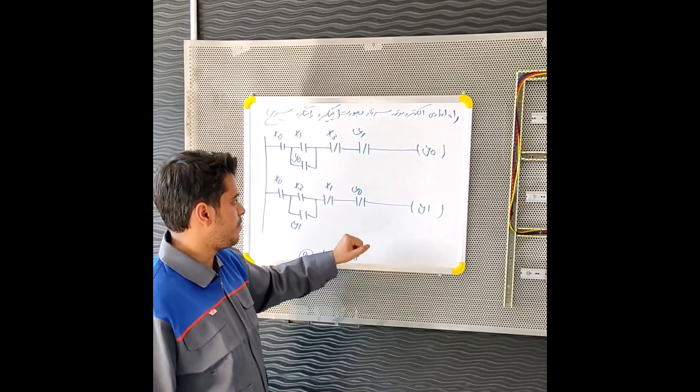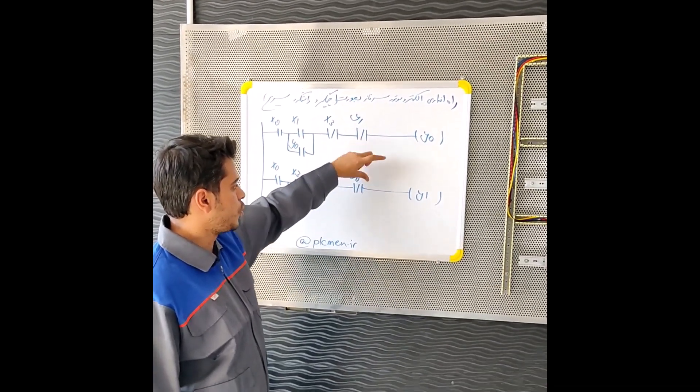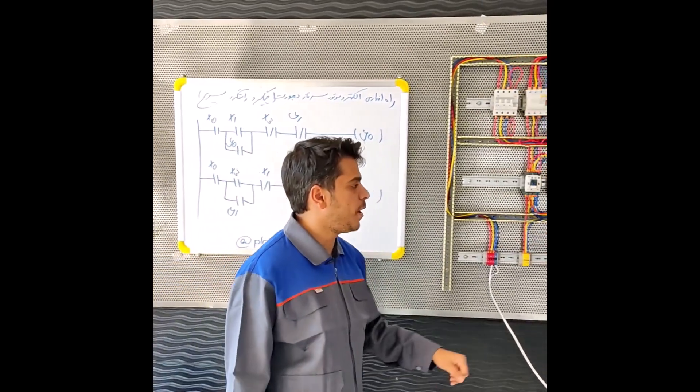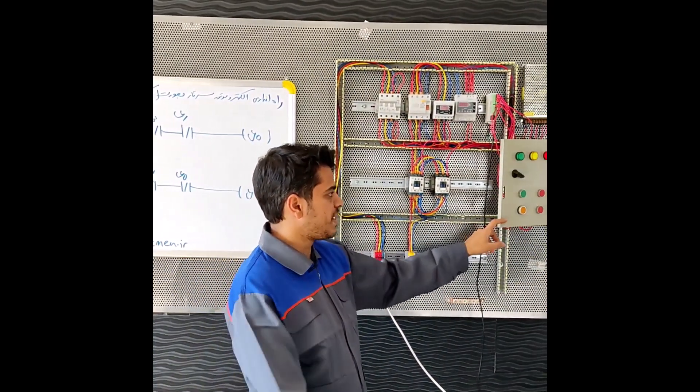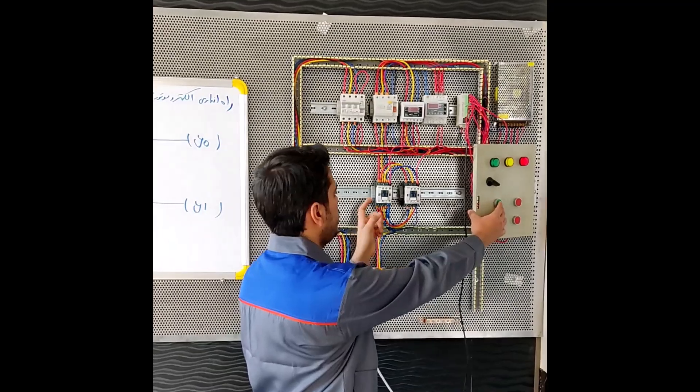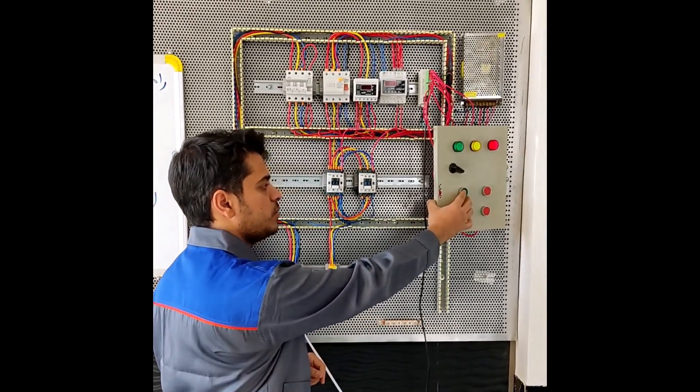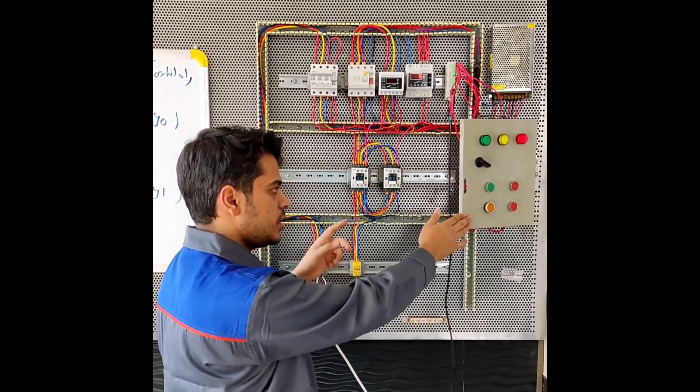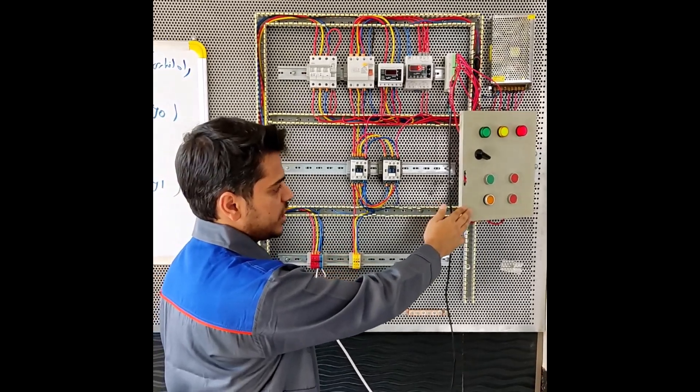The place of these two contacts is changed. Now if we activate input X1, the left-hand contactor is activated. We can disable it by entering stop.